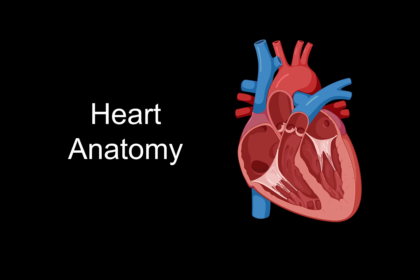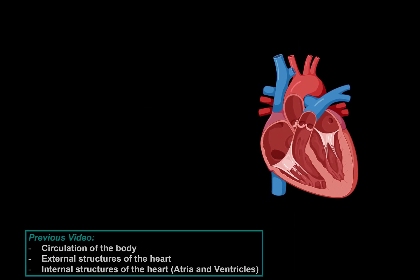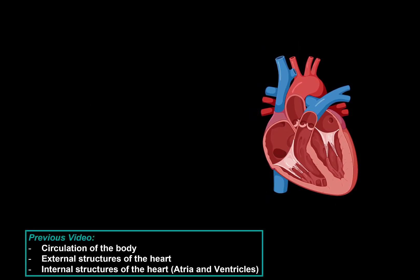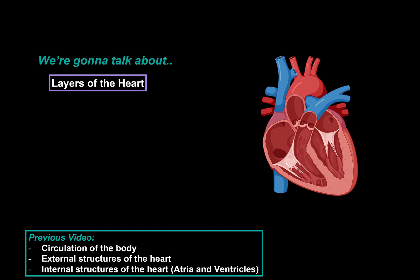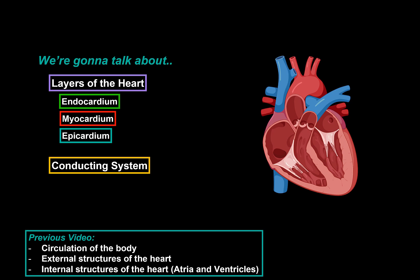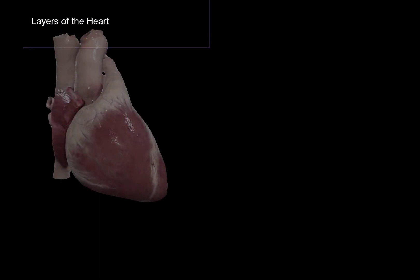What's up? Medite here. Let's talk about the heart again. In the last video, we covered the circulation system and the general anatomy of the heart. Now in this video, we're going to cover the layers of the heart, which include the endocardium, the myocardium, and the epicardium. Then we'll go through the conducting system. And after that, we're going to look at the general topography of the heart, which will help you from a clinical perspective. We're going to start with the layers of the heart.